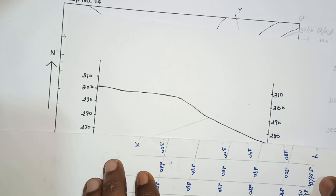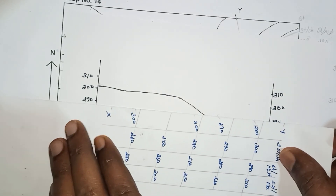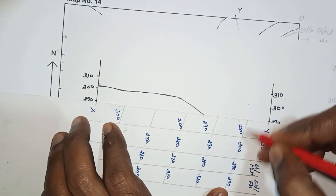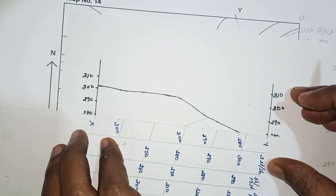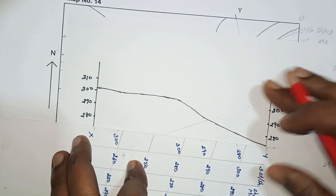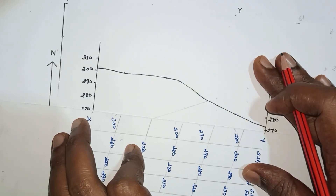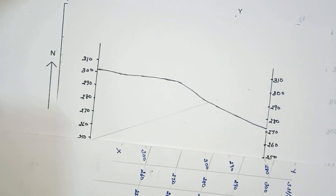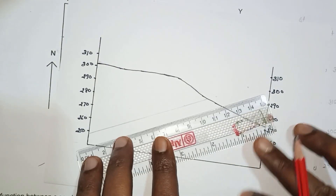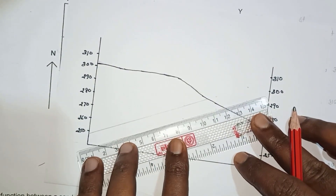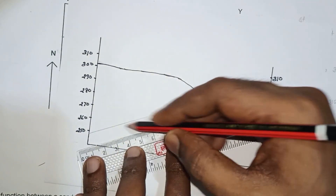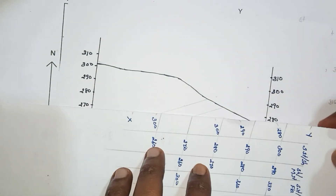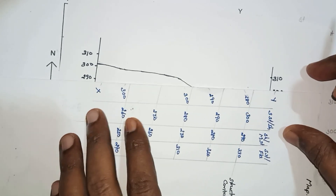Next, plot the shale and mudstone boundary. The structural contour at 290 is plotted here, and at 270 here — two points are sufficient, though you can use three if you prefer. Join these points with a line to get the shale-mudstone boundary in cross section. Then, the sandstone-flaggy limestone boundary is the upper bed.